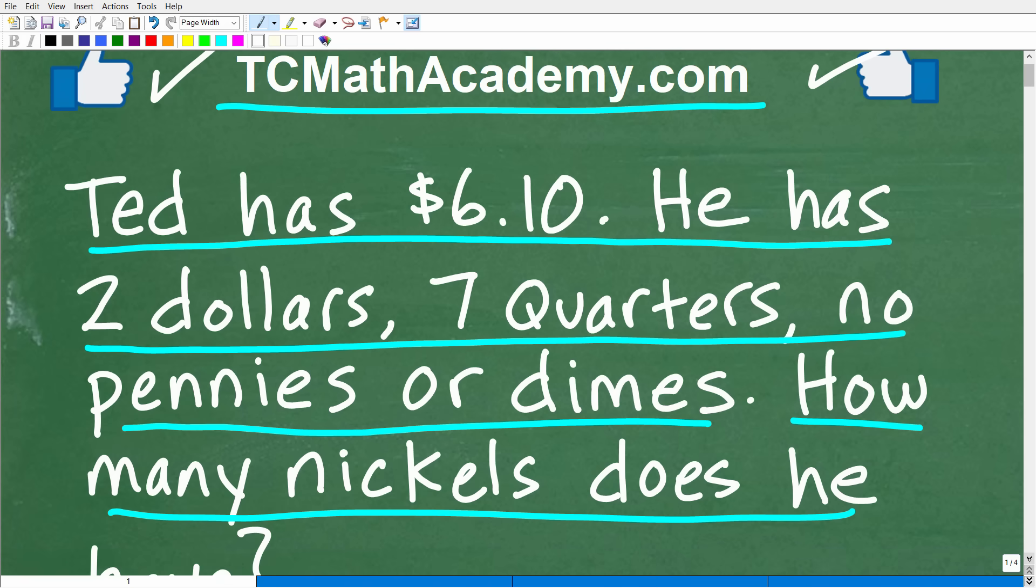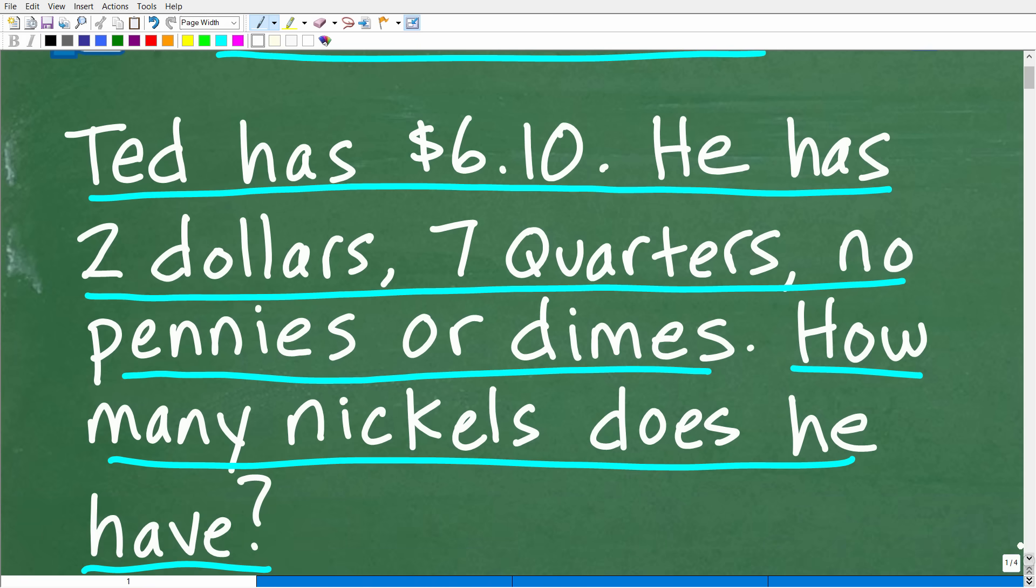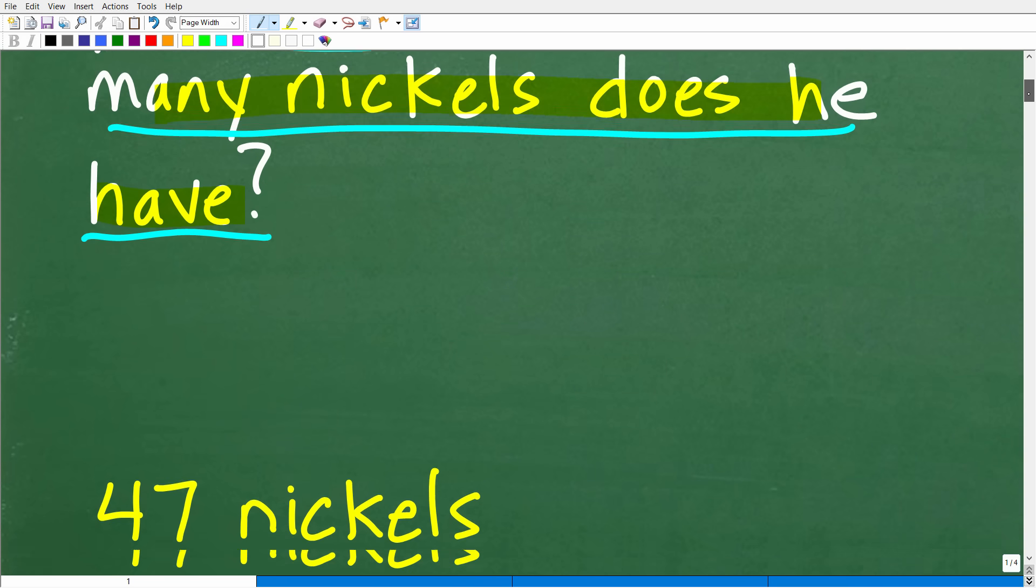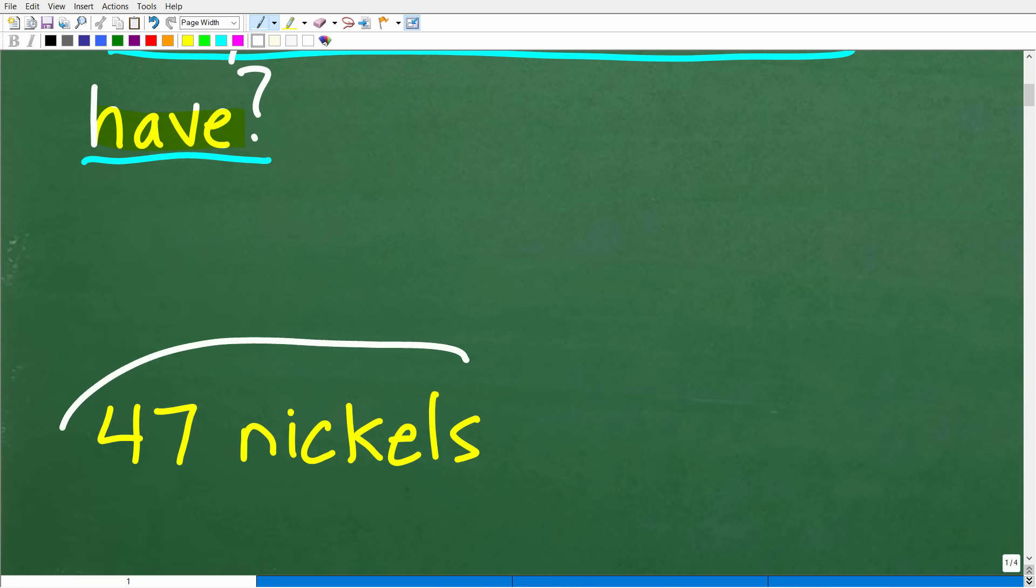Okay, so one more time before I show you the answer, just so there's no confusion on the question. Ted has $6.10. Now, of that $6.10, it's made up of $2, 7 quarters, and he doesn't have any pennies or dimes. So how many nickels does Ted have out of this $6.10? Well, the correct answer is 47 nickels.